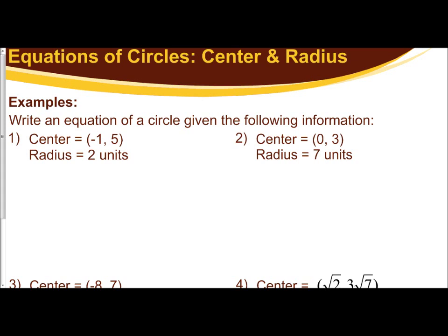Let's first write down the standard form for a circle. Remember that is the quantity x minus h squared plus the quantity y minus k squared equals your radius squared. Your center is represented by the h, k values, and you square your radius.